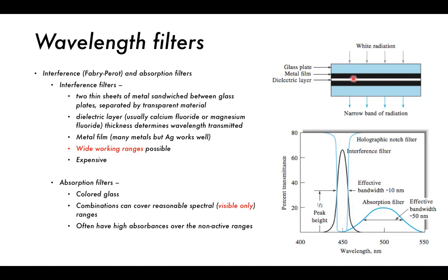Interference filters consist of two sheets of metal sandwiched between glass plates, separated by a transparent dielectric layer such as calcium fluoride or magnesium fluoride. The thickness of the dielectric layer determines which wavelengths are transmitted. The metal films - usually silver - have a crystal structure, and the distance between atoms in the metal film also determines which wavelengths can pass through. Wide working ranges are possible by changing the thickness of the metal film or dielectric layer.